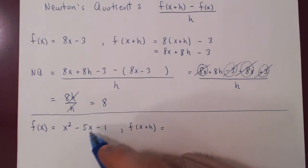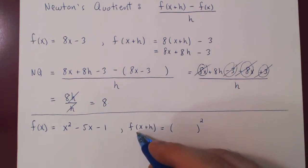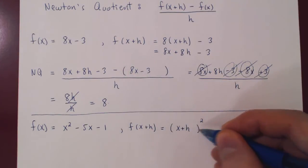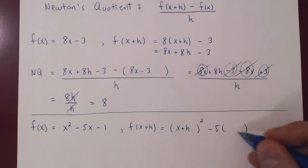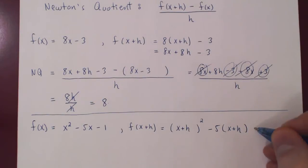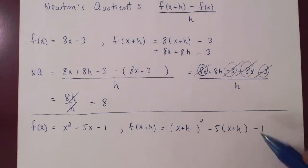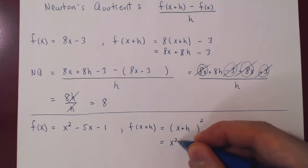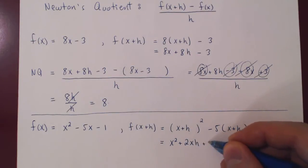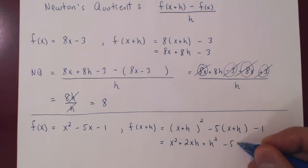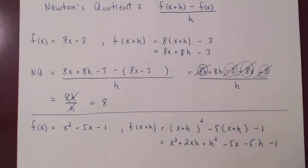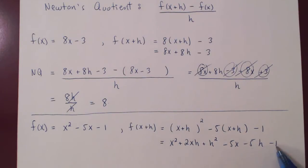Replacing x by x plus h: it used to be x squared, it is now x plus h all squared, minus 5 times x plus h, minus 1. Before plugging back into Newton's quotient, let's simplify first. Squaring gives x squared plus 2xh plus h squared, minus 5x minus 5h, minus 1. There are no terms to regroup — this is as simplified as it gets.